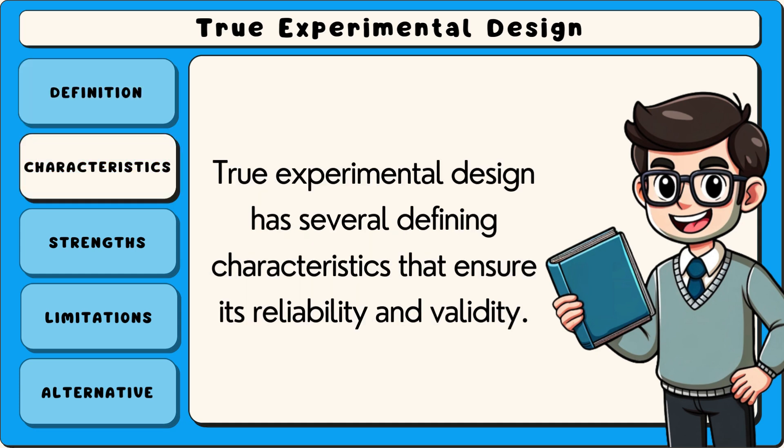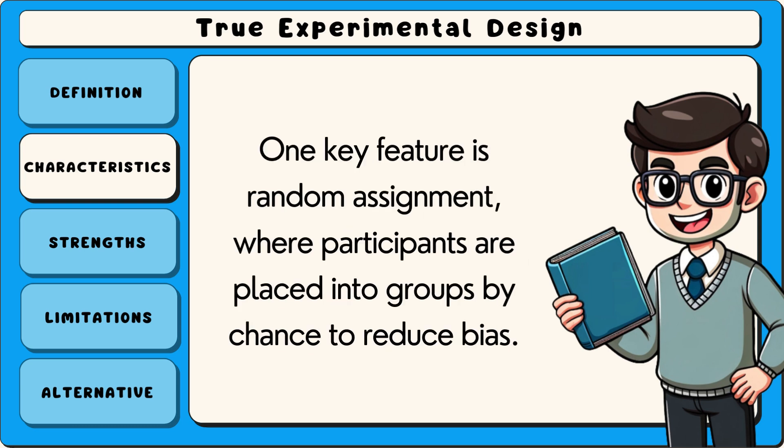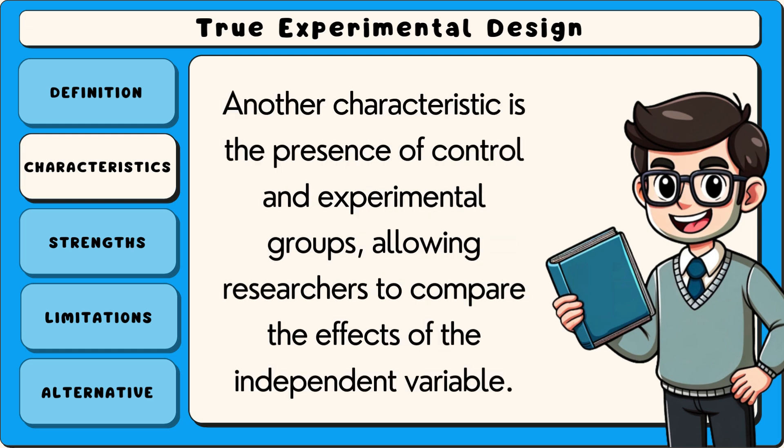True experimental design has several defining characteristics that ensure its reliability and validity. One key feature is random assignment, where participants are placed into groups by chance to reduce bias. Another characteristic is the presence of control and experimental groups, allowing researchers to compare the effects of the independent variable.